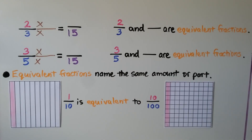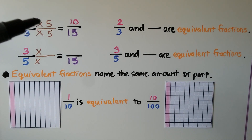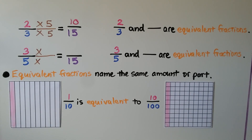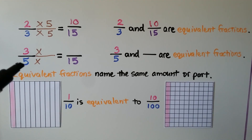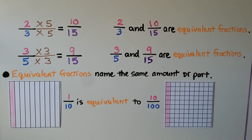Since we found that 15 is the least common multiple, we think 3 times some number is equal to 15 — that's 3 times 5. We multiply the numerator times 5 and we get 10/15 as an equivalent fraction. So 2/3 and 10/15 are equivalent fractions. For 3/5, we think 5 times some number is 15 — that would be 5 times 3. We multiply the numerator times 3 and get 9, so we have 9/15. That means 3/5 and 9/15 are equivalent fractions.